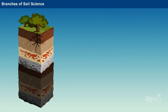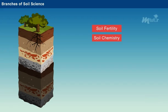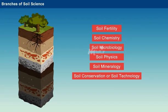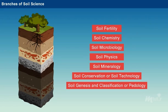Based on the properties, soil science is classified into several branches such as soil fertility, soil chemistry, soil microbiology, soil physics, soil mineralogy, soil conservation or soil technology, soil genesis and classification or pedology, and soil survey.